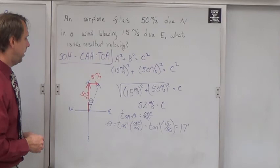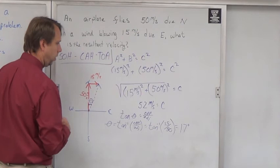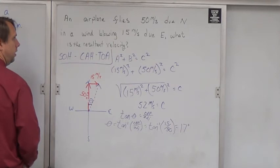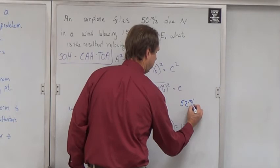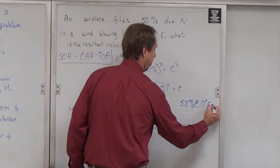Now, how do we name that vector? Well, that 17 degrees went to the east of north. So our final answer is 52 meters per second at 17 degrees east of north.